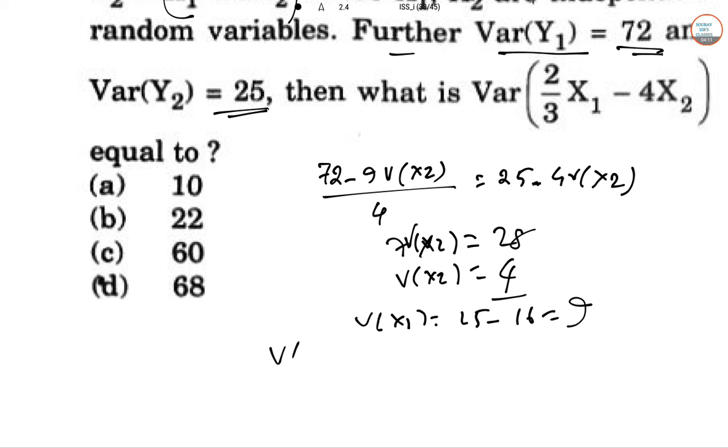So V((2/3)X_1 - 4X_2) is (4/9) × 9 + 16 × 4. That gives us 4 + 64, which equals 68 as the answer.